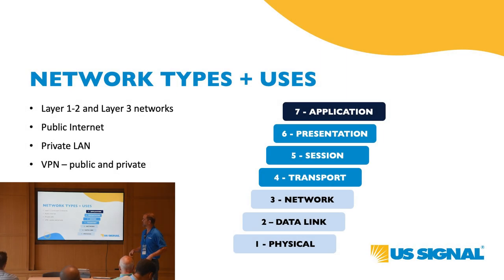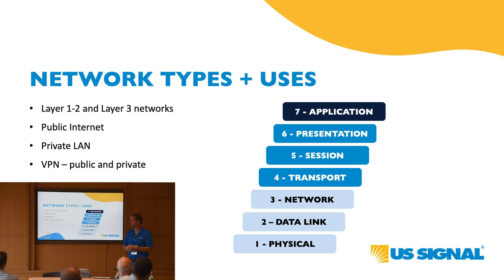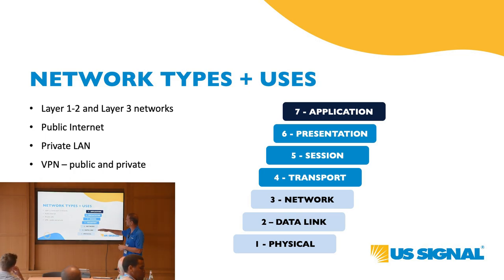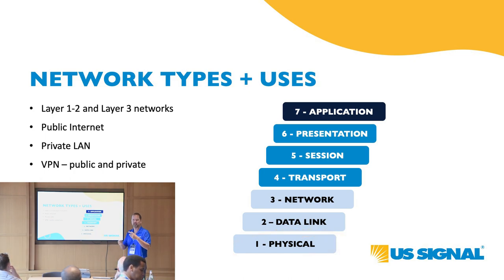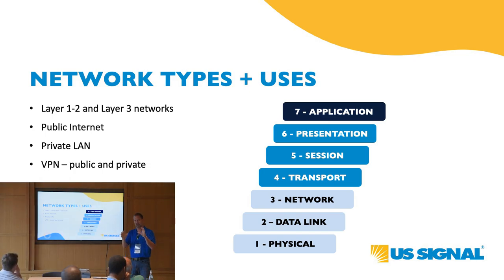We'll start out with basic network types and uses. You'll hear folks refer to a layer 2 network or a layer 3 network — what they're referring to is the OSI model. The OSI model gives us a building framework for when a network gets built. You've got the physical layer — that's going to be your Cat5, Cat6 cable, your fiber cable. Wireless technology fits into that layer as well.